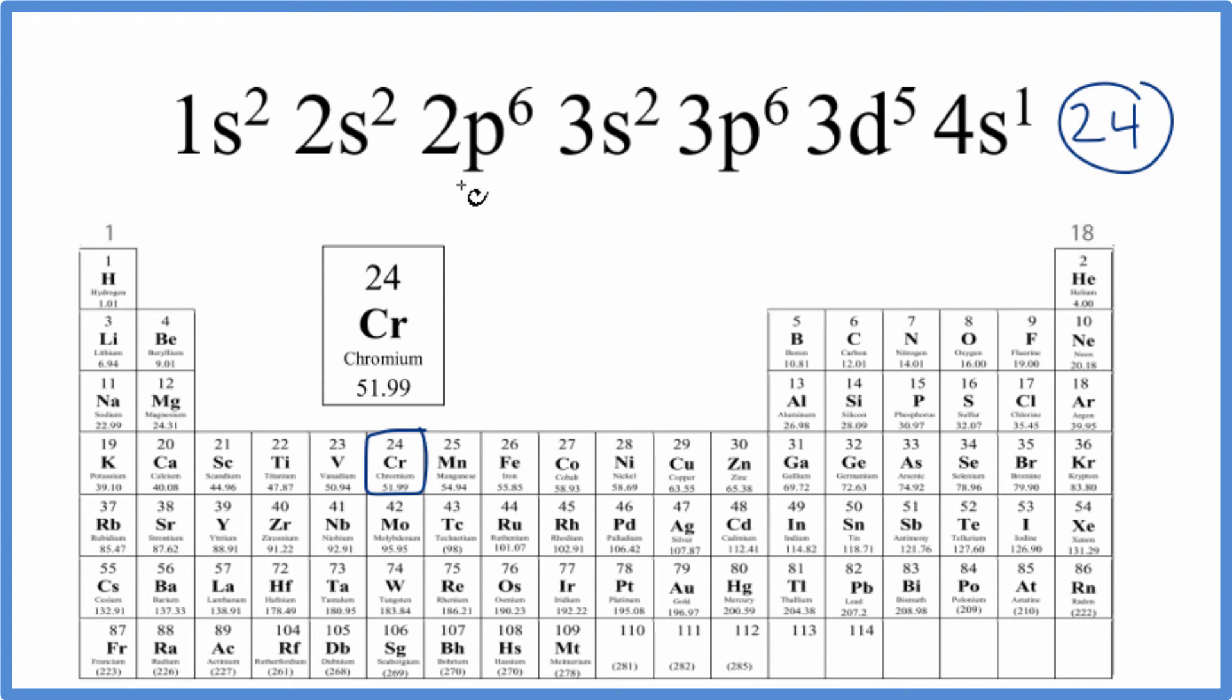This is Dr. B, figuring out which element has the electron configuration 1s2 2s2 2p6 3s2 3p6 3d5 4s1. It's chromium, and be aware chromium has an exceptional electron configuration. Thanks for watching.